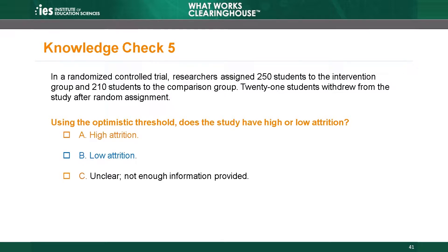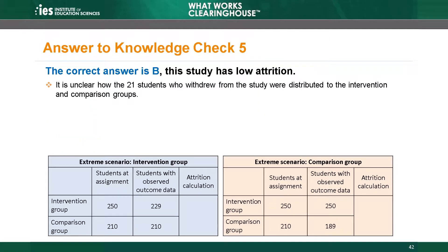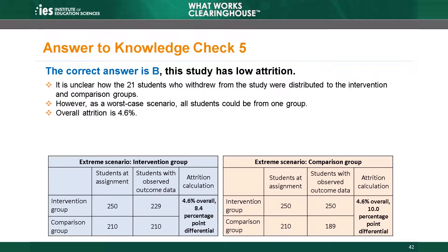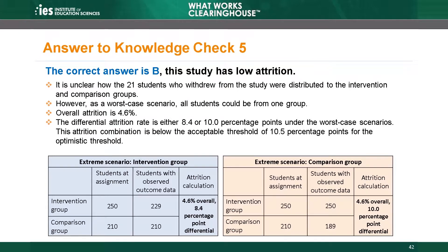The correct answer is B — this study has low attrition. Although it is unclear how the 21 students who withdrew were distributed to the intervention and comparison groups, we can calculate attrition under a worst-case scenario, with the 21 students either all in the intervention group or all in the comparison group. Overall attrition is 4.6% in either scenario. For this level of overall attrition, even if differential attrition is as high as 10.5 percentage points, the study will have low attrition under the optimistic threshold.